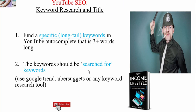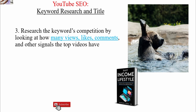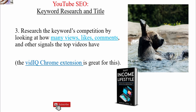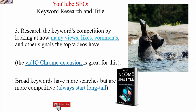So two points we've covered so far: using specific long-tail keywords and using keywords that are searched for. Point number three on YouTube SEO is to search the keyword's competition by looking at how many views, likes, comments, and other signals the top videos have. This is done by using the VidIQ Chrome extension, which is free, or TubeBuddy, which is also a free Chrome extension that gives you all the views, likes, and comments that your keyword is getting. Broad keywords are more competitive, so always use long-tail keywords and not broad keywords.